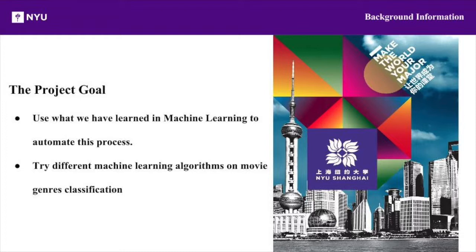As that little clip said, the goal of our project is to use movie synopses to successfully classify movie genres, and to automate this process so we no longer have to rely on user submissions. Regarding our project, we're focusing on three machine learning algorithms: support vector machines, k-nearest neighbors, and latent Dirichlet allocation. Throughout the presentation, we may refer to them by their abbreviations — SVM, KNN, and LDA, respectively.